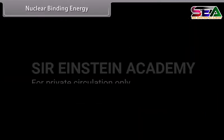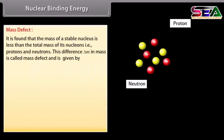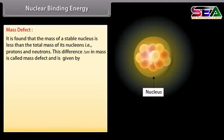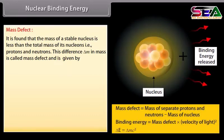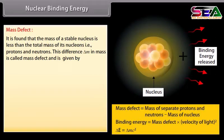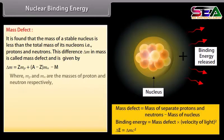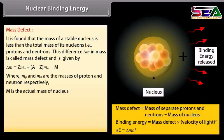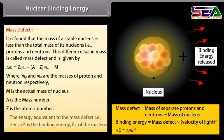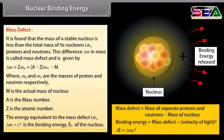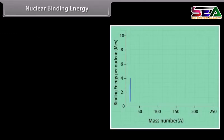Nuclear binding energy. Mass defect: It is found that the mass of a stable nucleus is less than the total mass of its nucleons, that is protons and neutrons. This difference ΔM in mass is called mass defect, and is given by ΔM = Z·Mₚ + (A−Z)·Mₙ − M, where Mₚ and Mₙ are the masses of the proton and neutron respectively, M is the actual mass of the nucleus, A is the mass number, and Z is the atomic number. The energy equivalent to the mass defect, ΔM·c², is the binding energy Eᴮ of the nucleus.